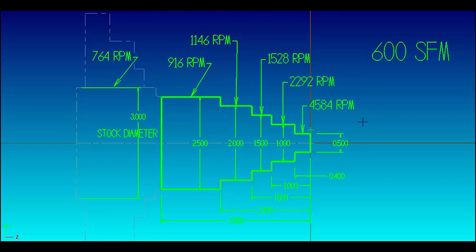You can see it would be hard to determine just an RPM that would work for all of these diameters and expect good tool life and good surface finish. Instead of doing that, just tell your machine to maintain 600 surface speed and the machine will automatically adjust for all these diameters.